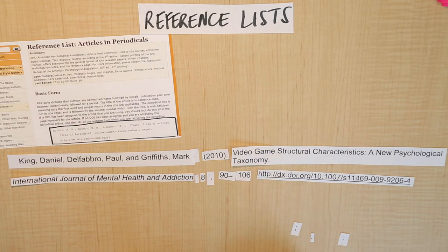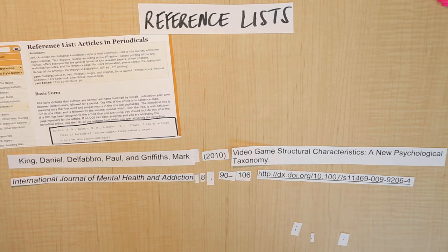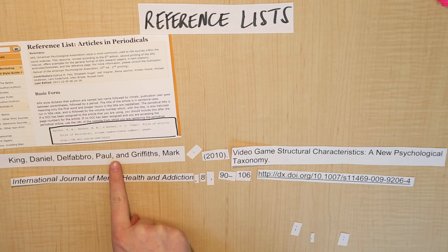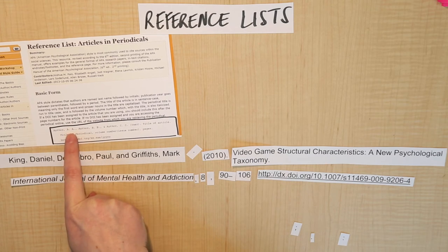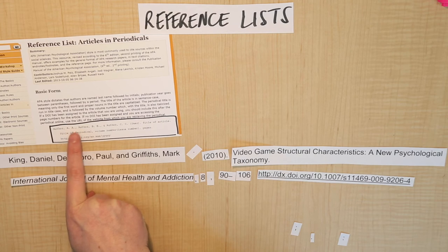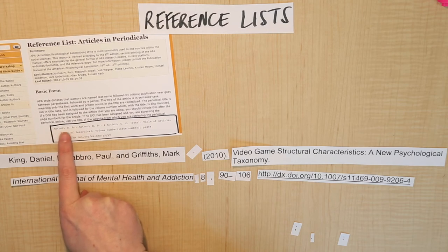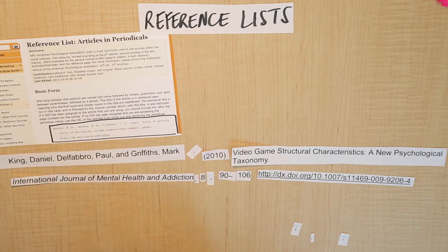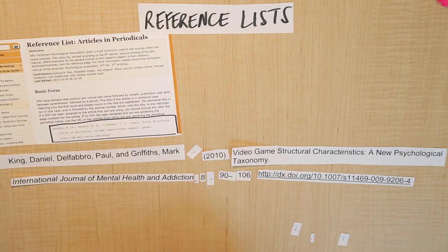Now take a look at this and think: is there anything that still needs to be fixed? There are a couple of things I can see that aren't quite right even though I mostly followed the example. The very first thing is that I've written out the authors' full names, but as you can see in the example they want you to use initials. So 'Author, A. A.' means the last name, then a comma, then their initials — not the whole name written out.